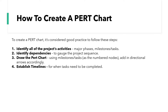So how do you create one? To begin with, you need to identify all of the project's activities — that could be major phases, milestones, and tasks. You need to consider and identify any dependencies, essentially enabling you to gauge the project sequence. Then you need to actually draw it: put down those milestones and tasks, think about the numbered nodes, and add in those directional arrows accordingly. Lastly, you need to establish your timelines for when the tasks need to be completed.